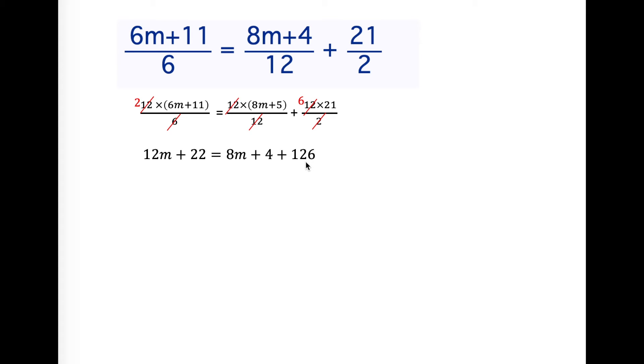The 4 adds to the 126 giving us 130. Then I want to get all my m's on one side. I have more m's on the left hand side so I'm going to subtract this 8m away from the right hand side. If I subtract 8m from the right hand side I also have to subtract it from the left hand side. I'm left with 4m+22 equals 130.